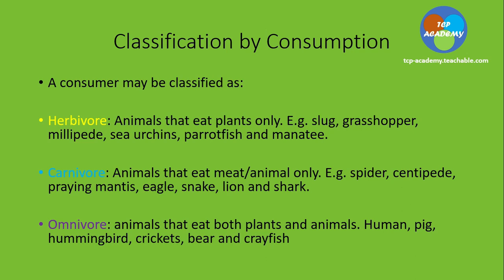Carnivores are animals that eat meat only. Examples include spider, centipede, praying mantis, eagle, snake, lion, shark, and the list goes on and on. For omnivore — students usually can only say human and pig — but omnivore refers to organisms feeding on both plants and animals. Human, pigs, hummingbird, crickets, bear, and crayfish are only some examples of omnivores we should be familiar with.